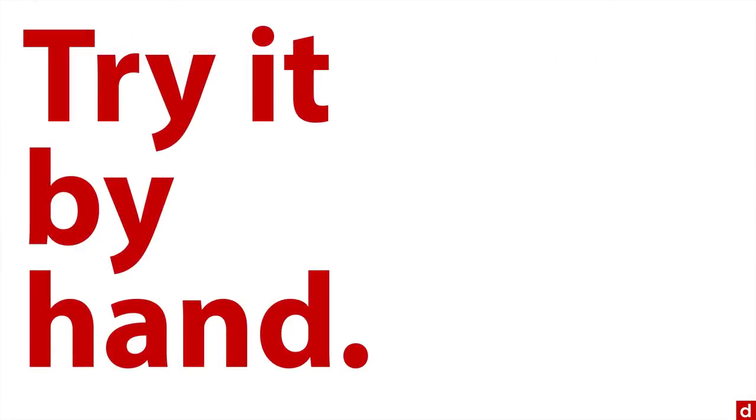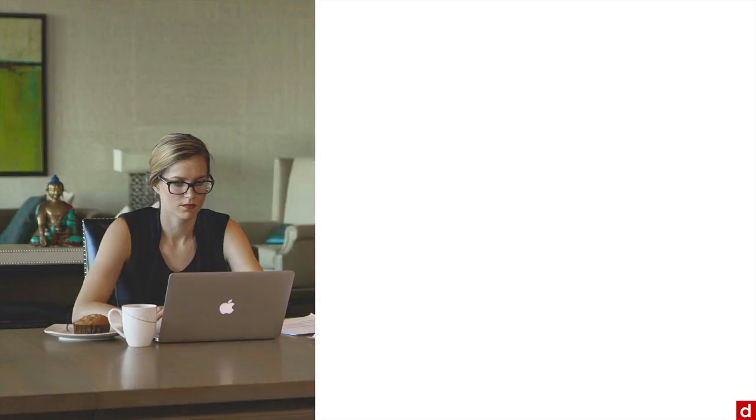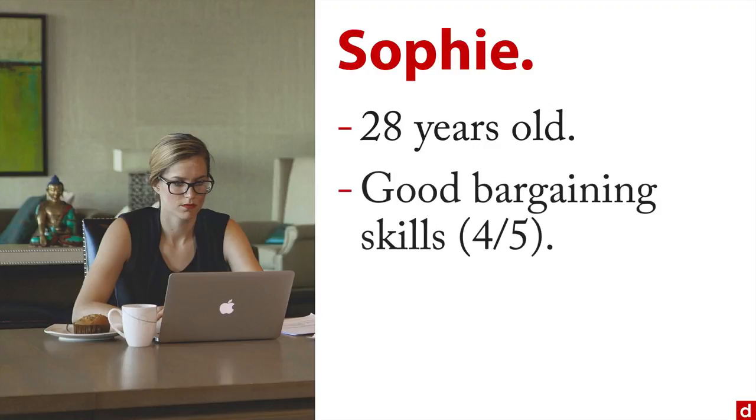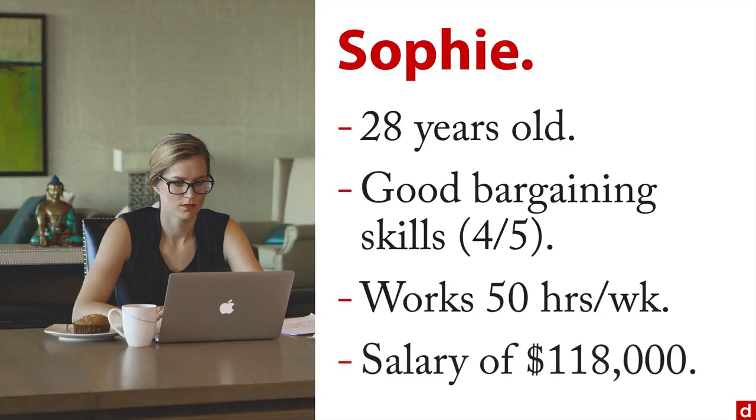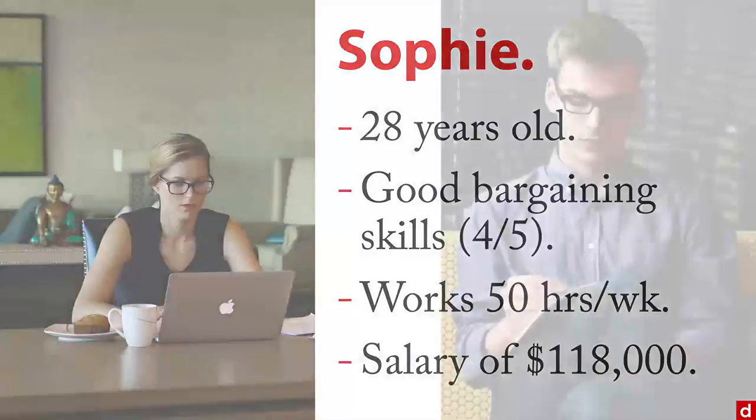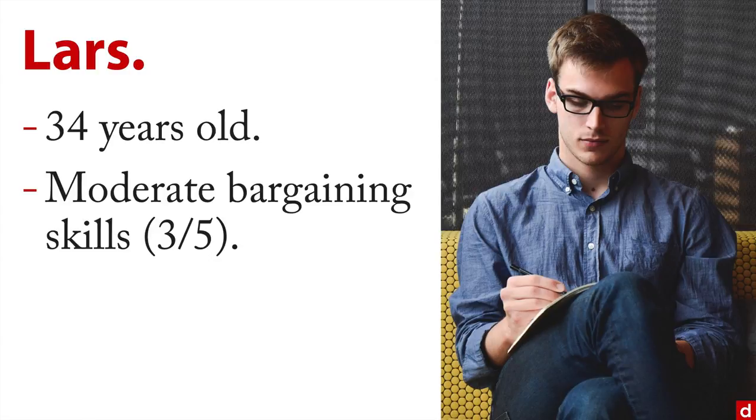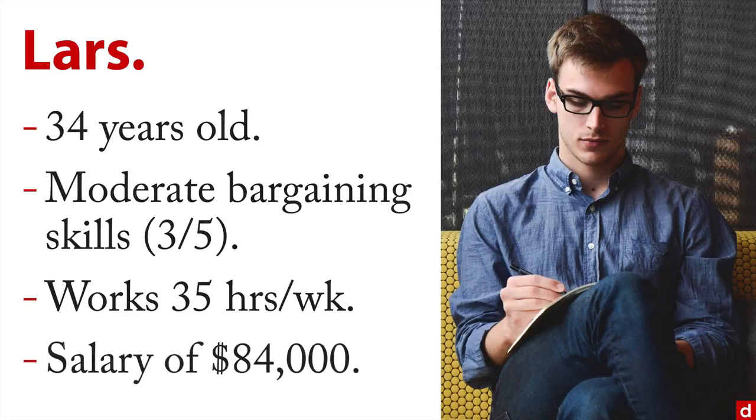We're going to take two fictional people. This will be fictional person number one, we'll call her Sophie. We'll say that she's 28 years old, and we'll say that she has good bargaining skills of four on a scale of five, and that she works 50 hours a week, and that her salary is $118,000. Our second fictional person, we'll call him Lars, and we'll say that he's 34 years old, and he has moderate bargaining skills, three out of five, works 35 hours per week and has a salary of $84,000.